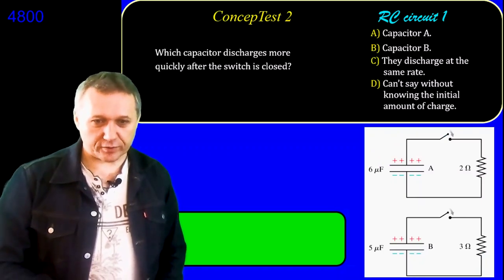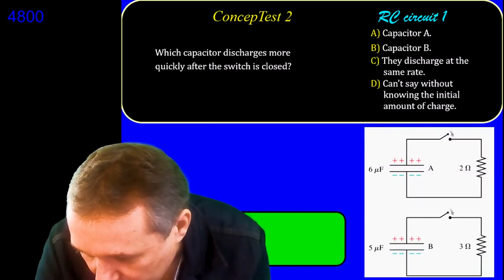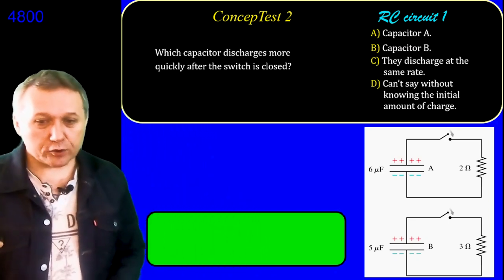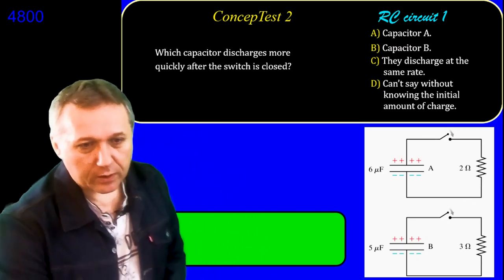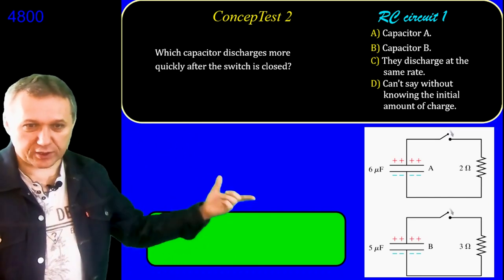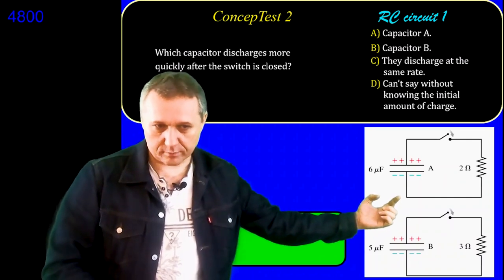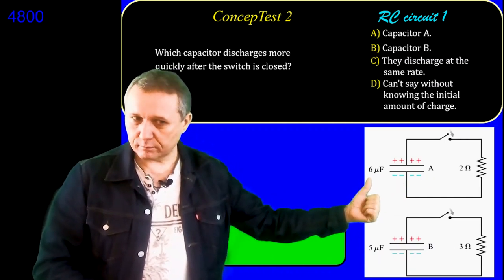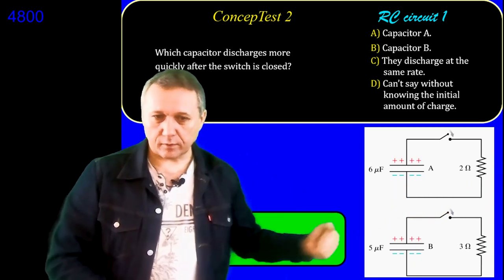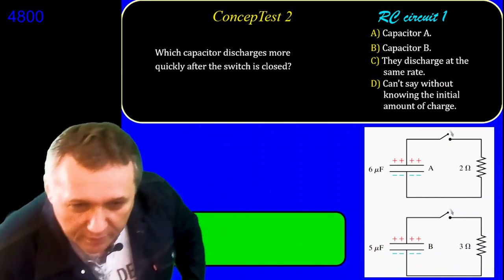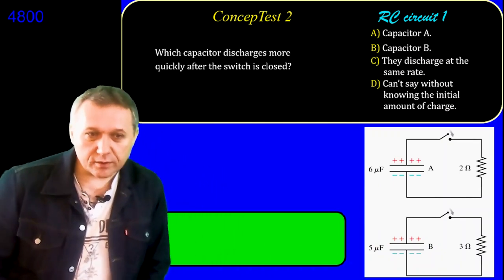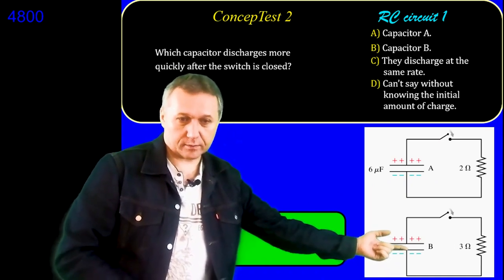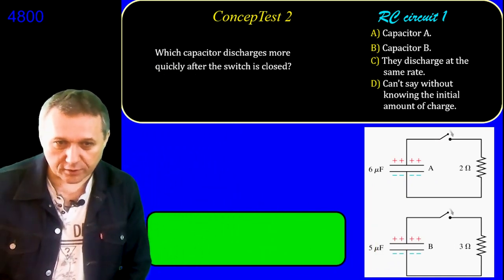Here's another question. There are two RC circuits in a discharging situation. Case A: capacitor 6 microfarads, resistor 2 ohms. Case B: capacitor 5 microfarads, resistor 3 ohms. Which capacitor discharges faster? The poll is in the chat.